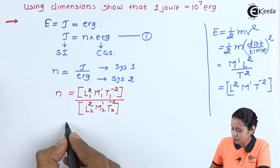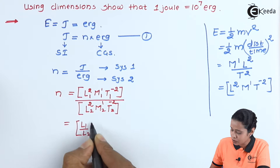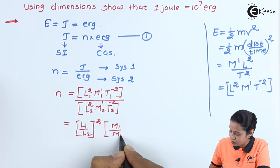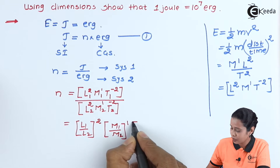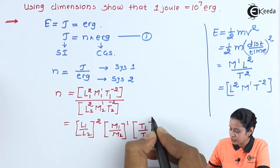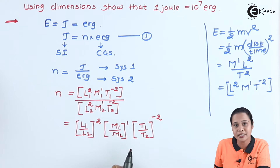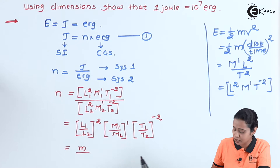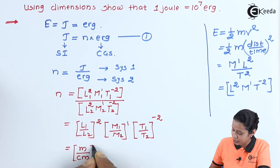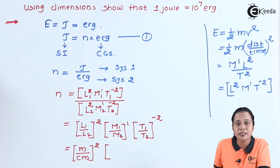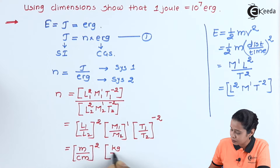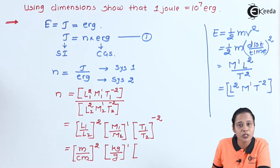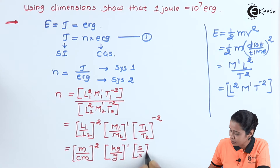This is the value of n. Now let us simplify this. Here we have L1 by L2, its power is 2. Then we have M1 by M2, its power is 1. And then we have time, T1 by T2, its power is minus 2. We know our first system is the SI system, so length is expressed in terms of meters, and L2 means the CGS system so we write centimeter — its power is 2. Mass in SI is kg and mass in CGS is gram, its power is 1. Time in both units is the same — that is seconds — so we have seconds upon seconds, its power is minus 2.